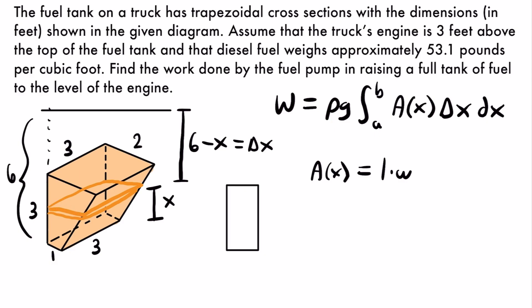We need to relate the width of our slices of fuel to the height x of that slice. The cross-sectional area has a length of three feet, but we don't yet know the width in terms of x. We can make use of similar shapes. First, let's draw one of those trapezoidal cross-sections — the side view of the tank — which is a trapezoid where the side measures three, the bottom measures one, and the top measures two.